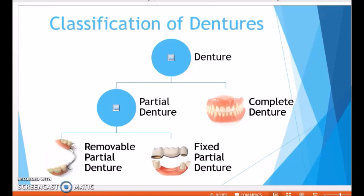Before moving on to what artificial teeth are, let me give an overview of the classification of dentures. Dentures can be classified as partial or complete. Partial dentures replace a few missing teeth, while complete dentures replace all missing teeth in one or both arches. Partial dentures can be removable or fixed. Fixed partial dentures cannot be removed by the patient but can be removed by the dentist — they are also known as bridges. Removable partial dentures can be easily removed by the patient to clean and then placed back.